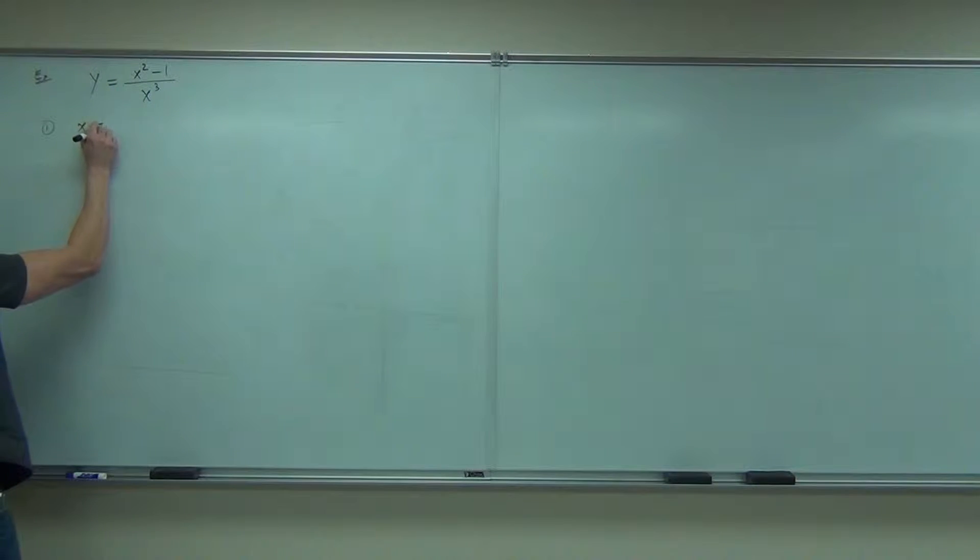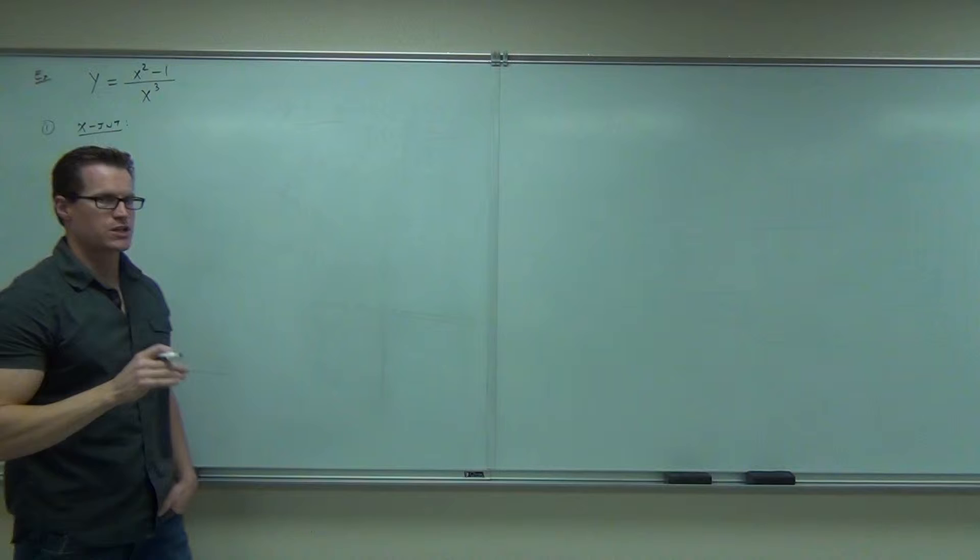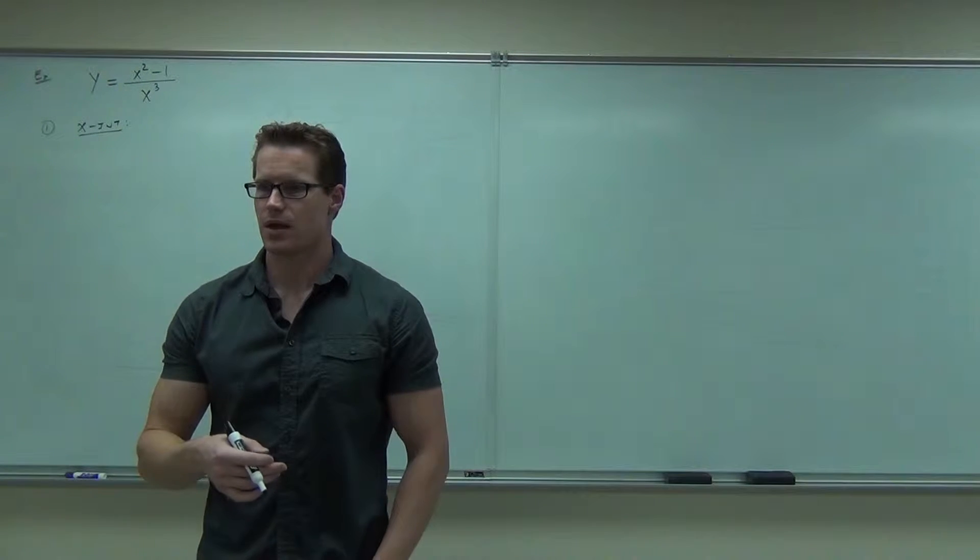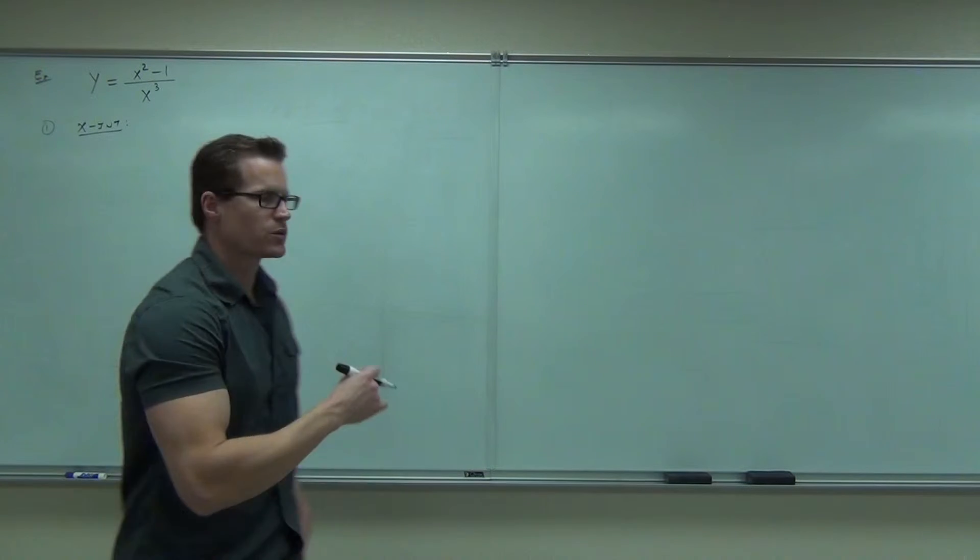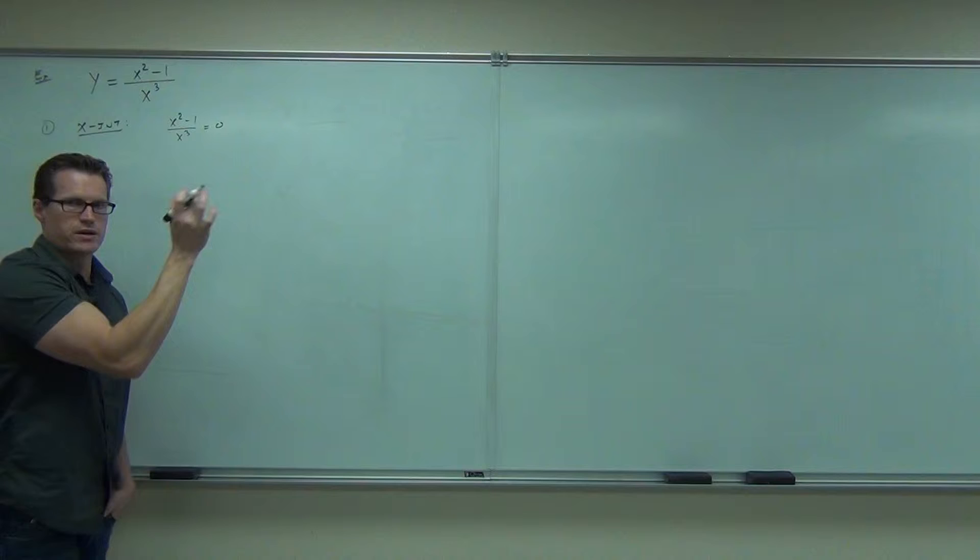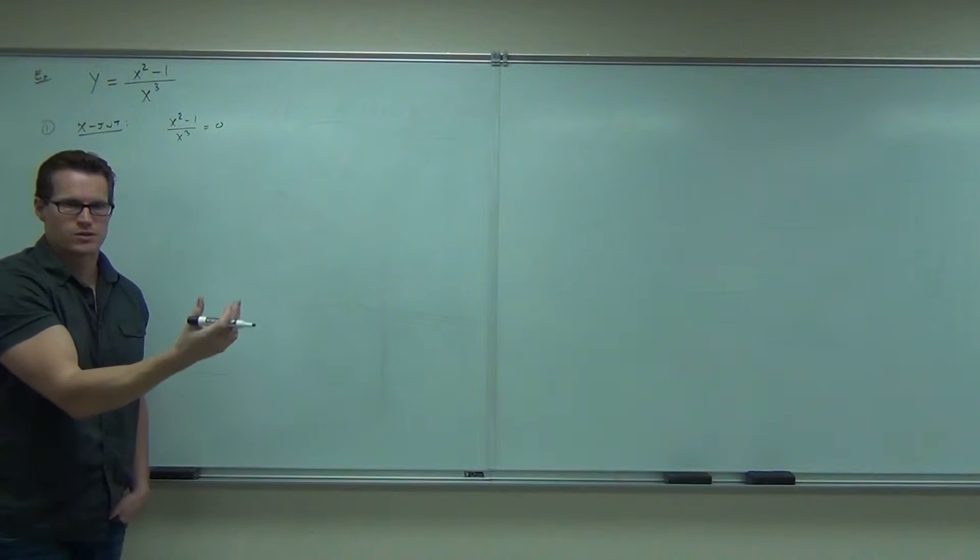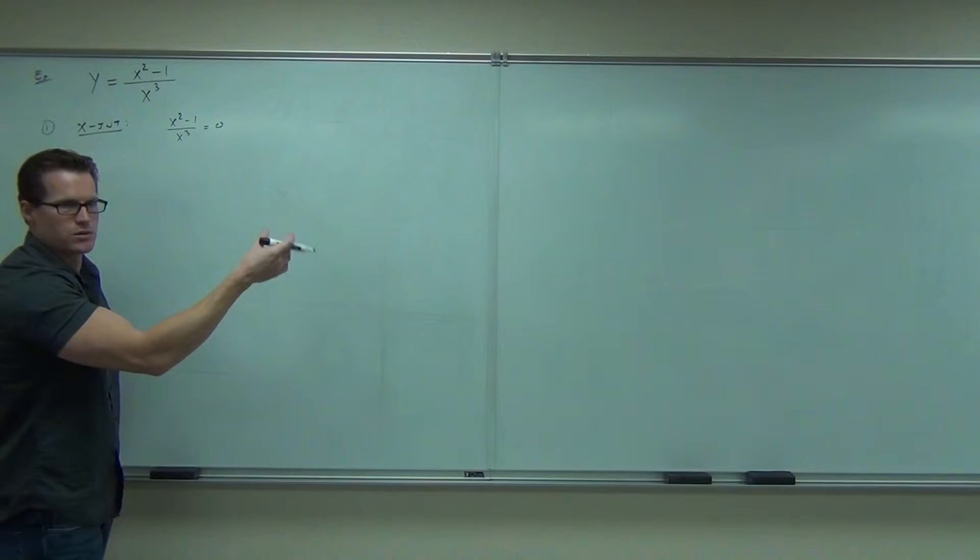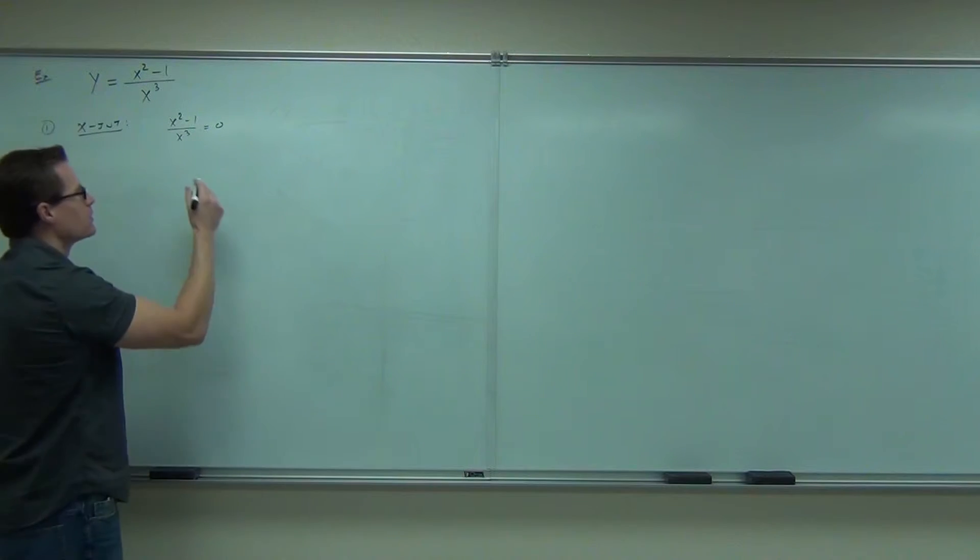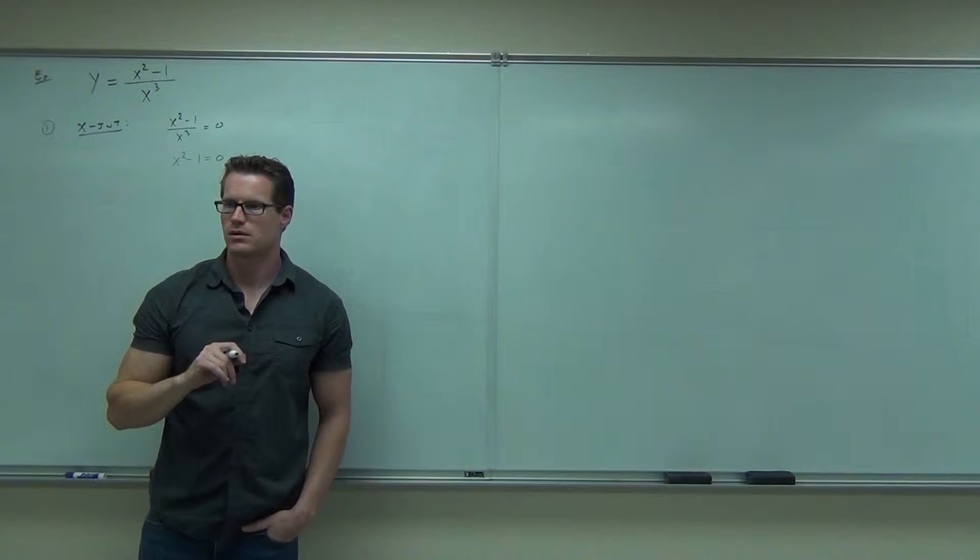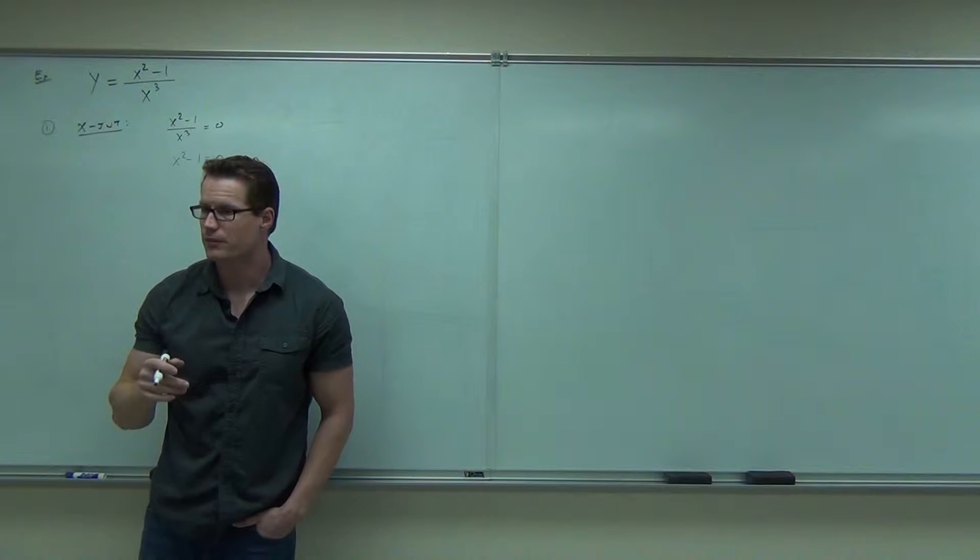x intercept would happen where you set your function equal to 0. You follow me? Set your function equal to 0, and then you solve it. Well, if you set your function equal to 0, basically that's just where the numerator equals 0. The denominator if you equal to 0 is undefined. So we really just say, okay, even if you want to think about it this way, multiply both sides by x cubed, you still get x squared minus 1 equals 0. What are my x-intercepts? 1 and negative 1. 1 and negative 1. Very good.